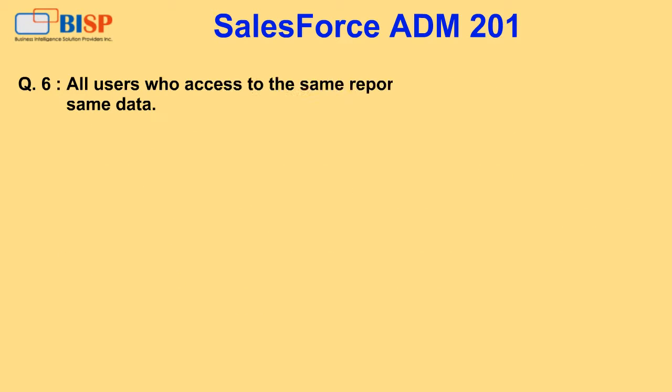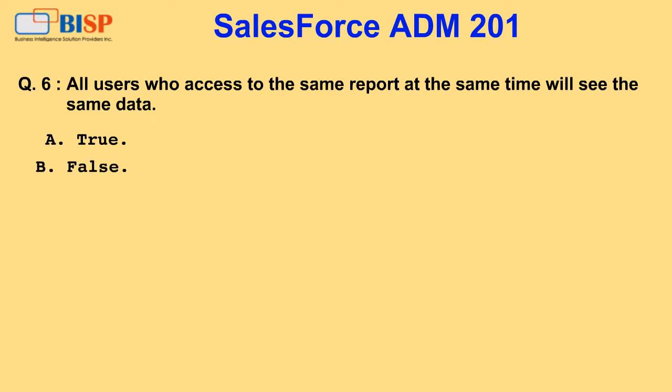Question 6. All users who access the same report at the same time will see the same data. A. True. B. False.